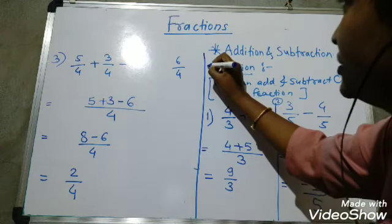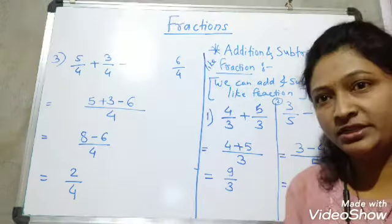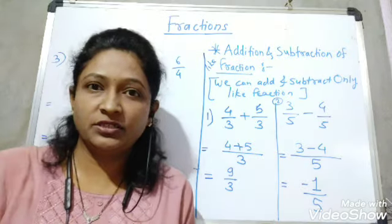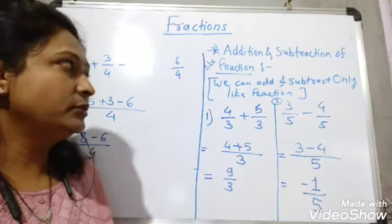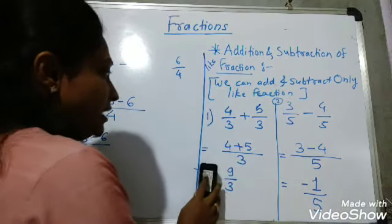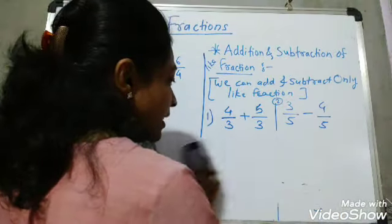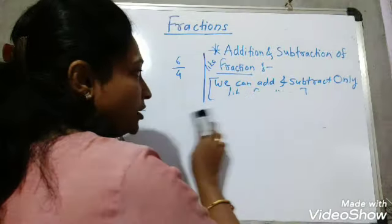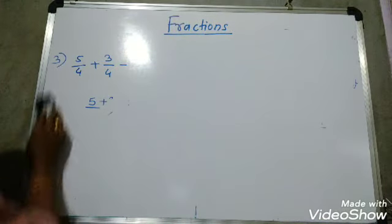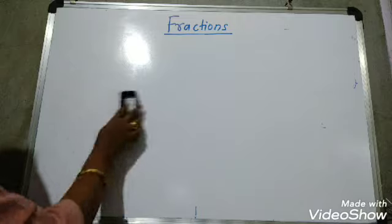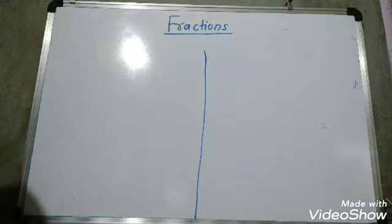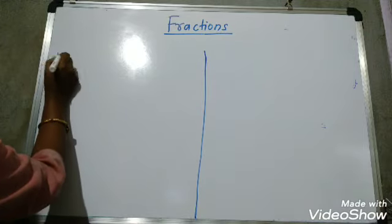Now we are going to learn how to add and subtract unlike fractions, which is a little bit harder because their denominators are not the same. Since the rule says we can only add like fractions, if fractions are unlike, we must first convert them into like fractions.